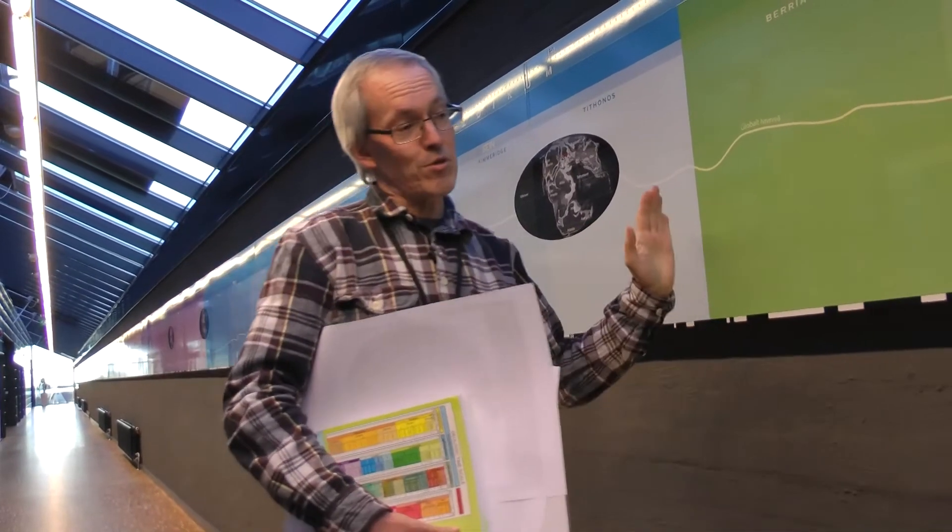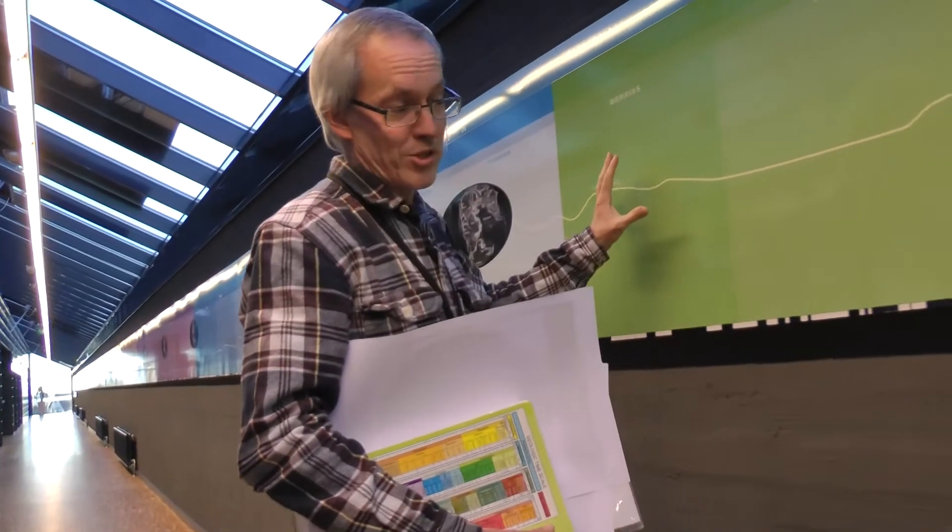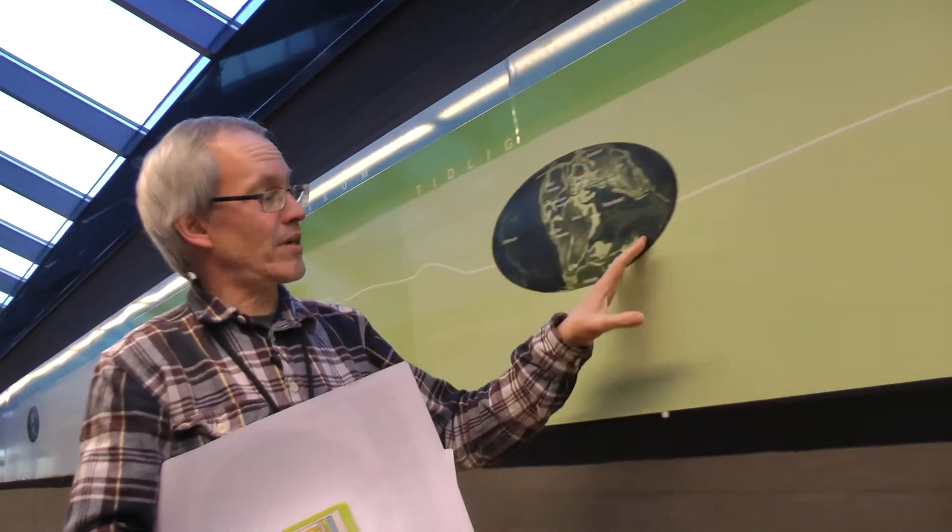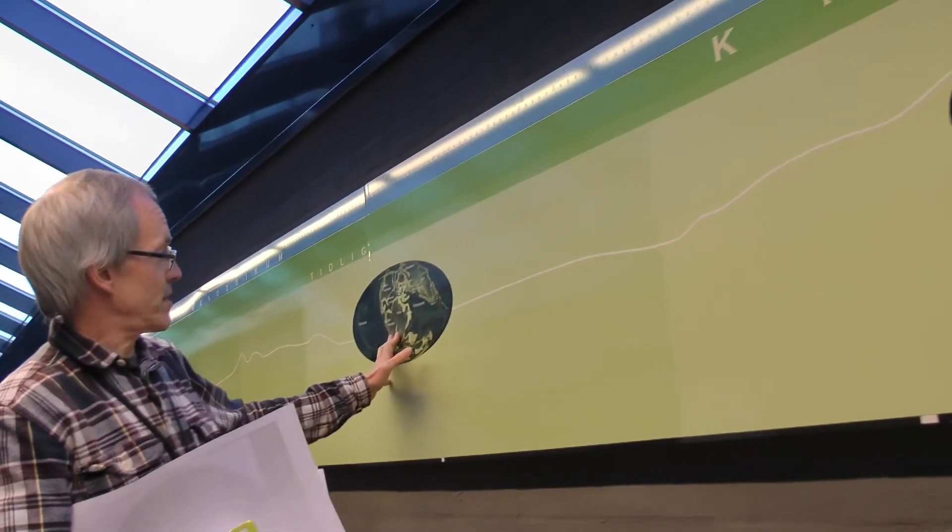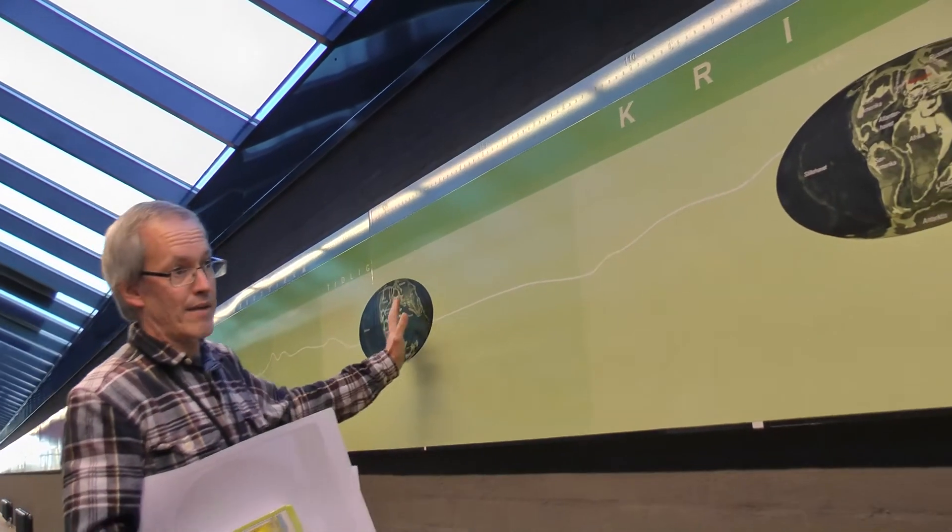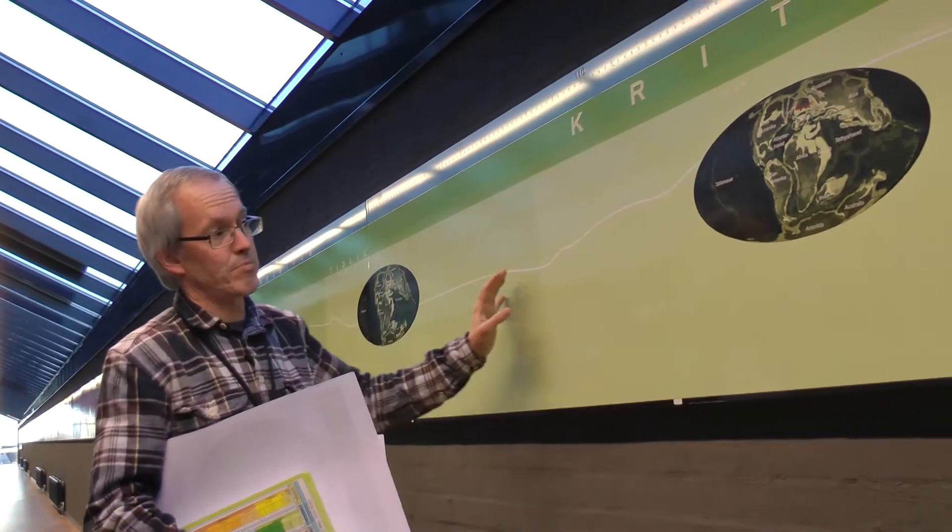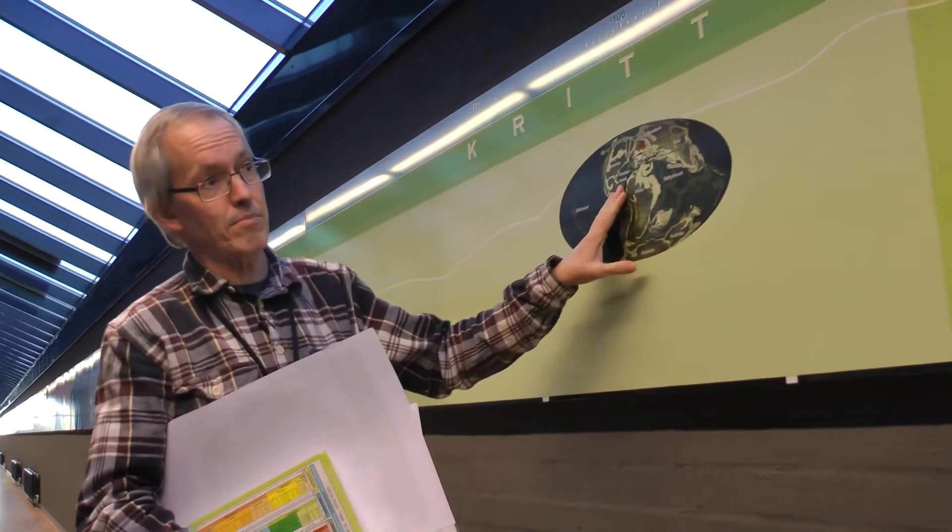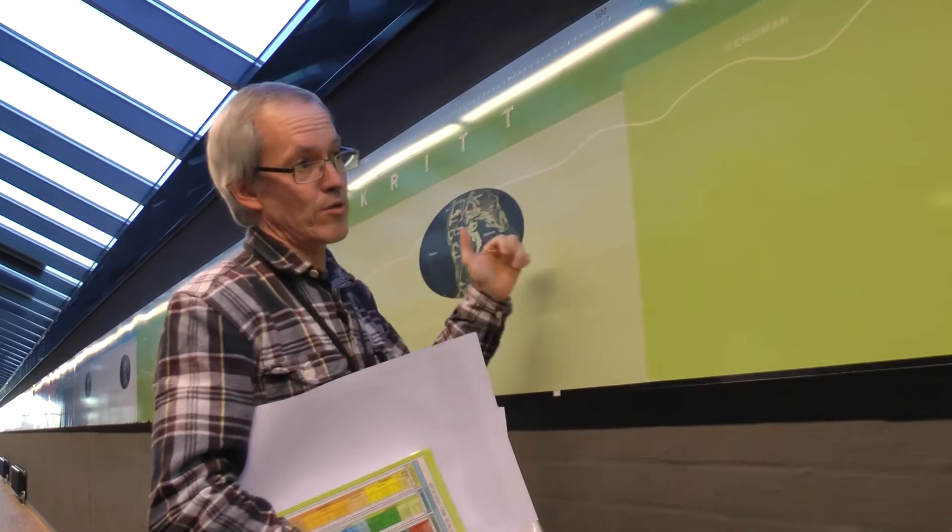So then we go into the Cretaceous. This black clay deposit stops and we get regular marine deposits. The sea level is constantly rising. South America and North America are spreading, Africa is breaking off North America, so we get the beginning of the Atlantic Ocean that's getting bigger and bigger.